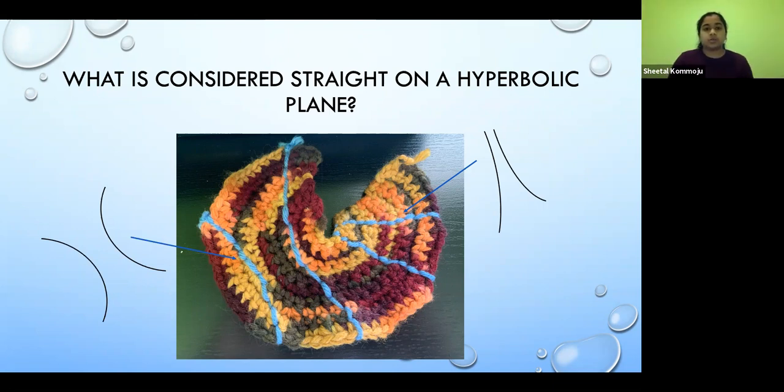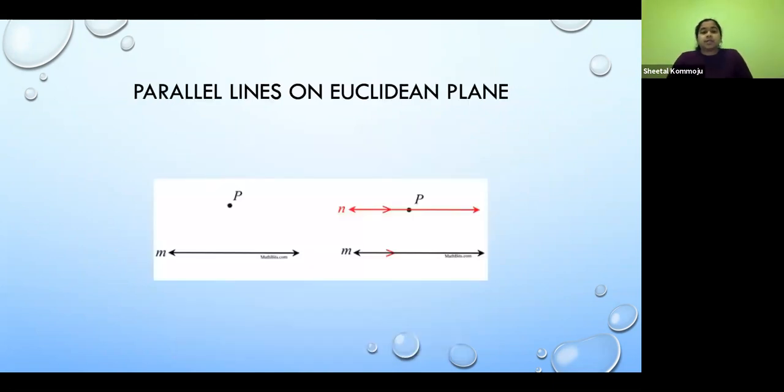Now we're going to move on to parallel lines on the Euclidean plane. So if I were to draw a straight line and draw a point that's not on that line, I would only be able to draw one line that's parallel to our original line M. And that's basically the parallel postulate on the Euclidean plane.